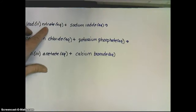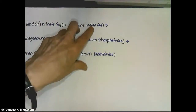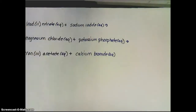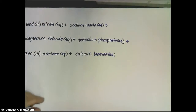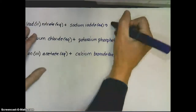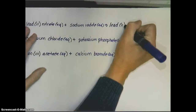I have a positive and a negative, and in solution, I have another positive and another negative. When they're in solution, they can switch partners. So, Asher, the lead-2, instead of going with the nitrate, what could it go with instead? Well, that could go with the other negative, iodide. So, we could have lead-2 iodide.